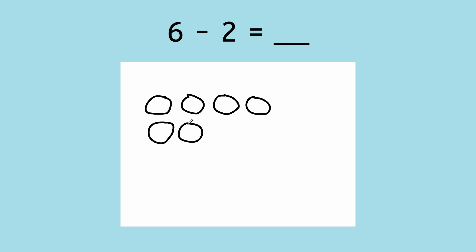Now how many does the number sentence say we need to take away? We need to subtract two. To do this, we can just cross out two balloons. One, two.